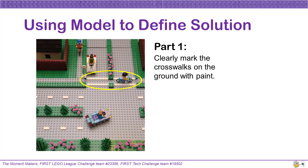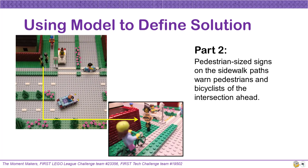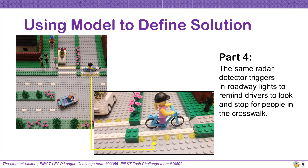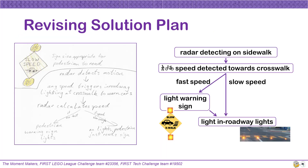We used our model to clearly describe our solution. Part one is to clearly mark the crosswalks on the ground with paint, as most crosswalks in our neighborhood are unmarked. Part two is to place pedestrian-sized signs on the sidewalk paths to warn pedestrians and bicyclists of the intersections ahead. Part three is to install a radar system pointed at the sidewalk paths to calculate the speed of oncoming people. If the speed of the person is too great, warning lights on the pedestrian-sized sign will light up to remind them to slow down before entering the crosswalk. Part four is to install in-roadway lights in the crosswalk that will flash to warn cars when a person is detected moving towards the intersection by the same radar detector.